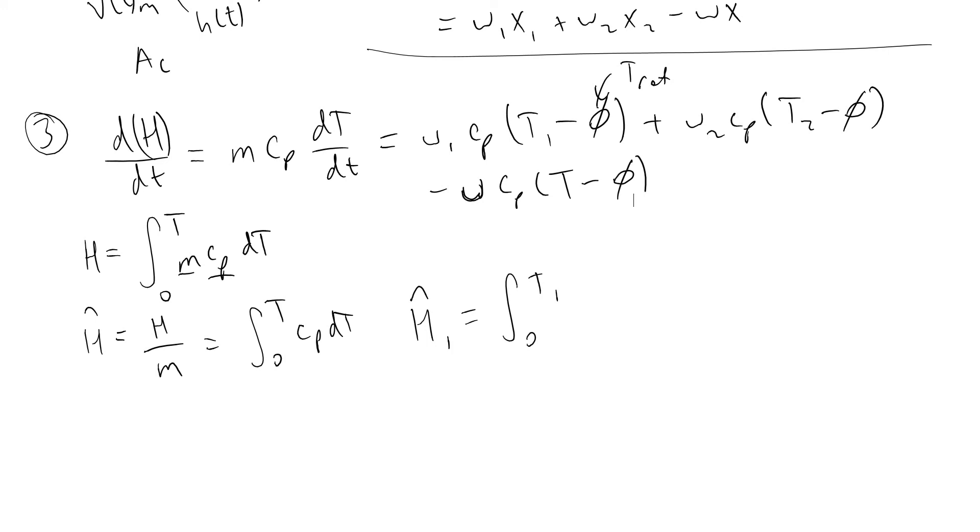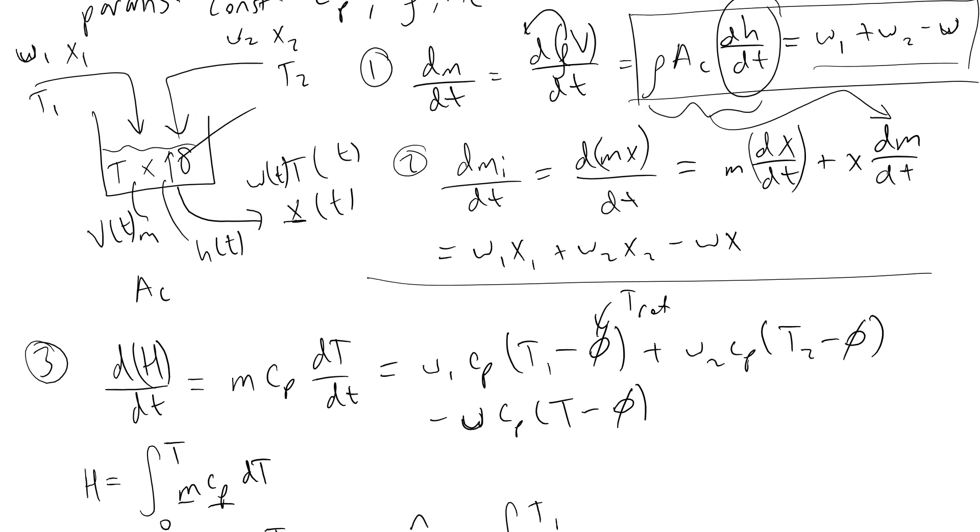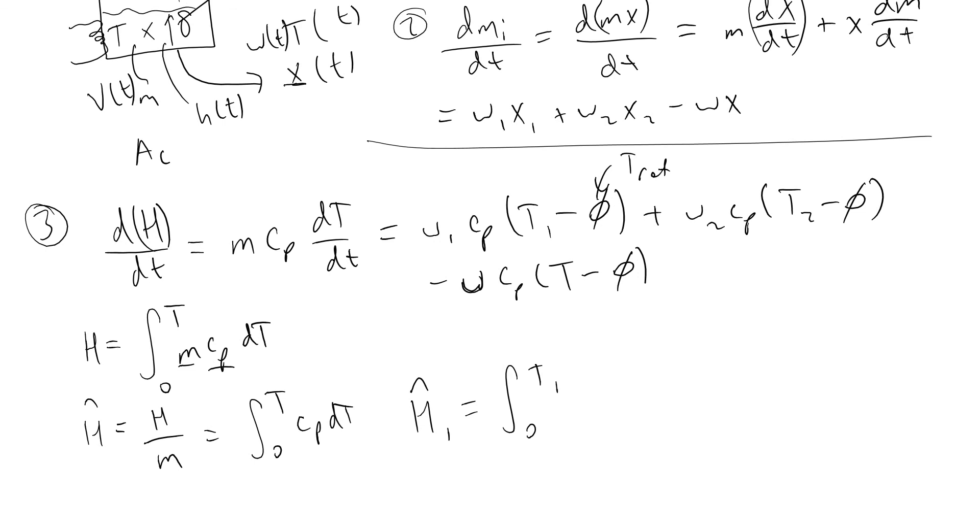Another thing to account for in these systems: we can have heaters adding or removing heat, and work occurring. We account for heat added as Q̇ with units of joules per second, and shaft work which accounts for frictional losses from a propeller spinning in the tank.